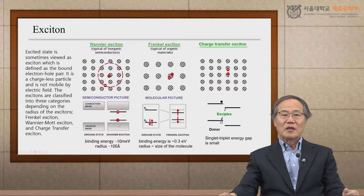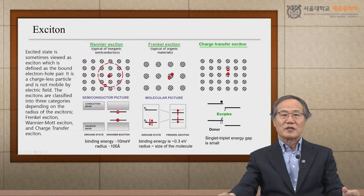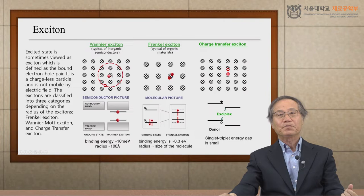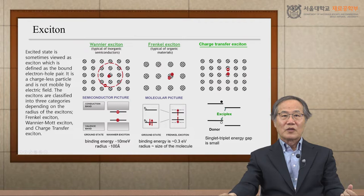Usually this binding energy is small in inorganic semiconductors because of the large dielectric constant. So that binding energy is small, and because of this small binding energy, the radius of the exciton is large. The exciton actually covers several atoms from the whole core nucleus atoms. So this is called the large exciton, or the Wannier exciton.